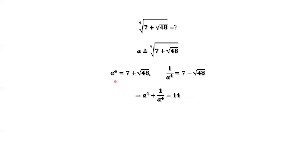If we add both sides of the two equations, the left-hand side is A to the power of 4 plus 1 over A to the power of 4. On the right-hand side, 7 plus 7 is 14, and negative square root of 48 plus positive square root of 48 cancel each other.